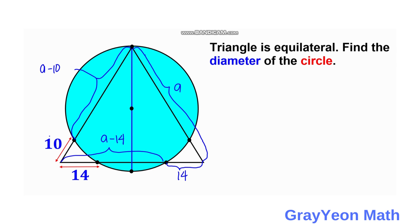Okay, so next is we use secant theorem. So we have the outside to be for this left length. So we have 10 times A is equal to A minus 14 times 14.